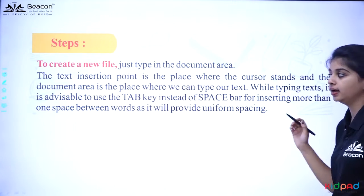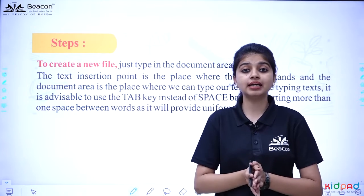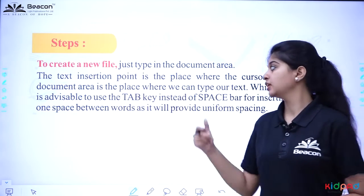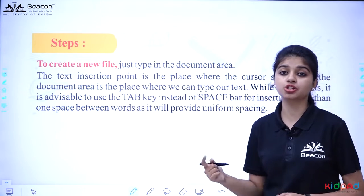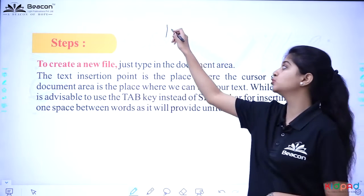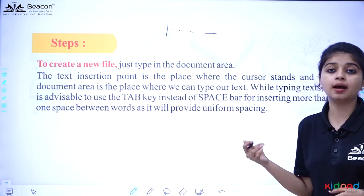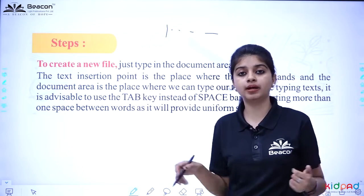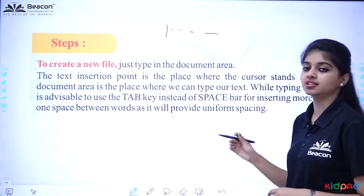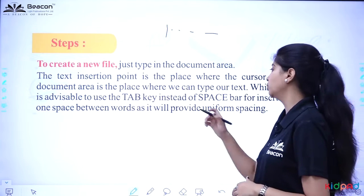Now let's see the steps if we want to create a new file. Suppose we have a new learner — we have opened MS Word and we want to create a document. How do we do it? Just type in the document area. There is a text insertion point — a blinking line. If you start writing, everything you type will be visible on screen. The entire white screen is our document area. The text insertion point is the place where the cursor stands.